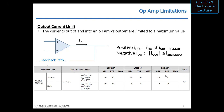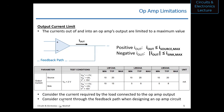You need to consider the current required by the load connected to the op amp output, and also the current through the feedback path, when designing an op amp circuit. So there's a voltage limit and a current limit, and you have to stay within both.